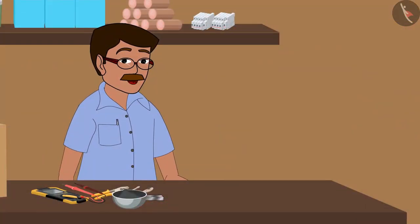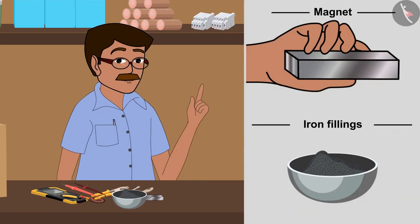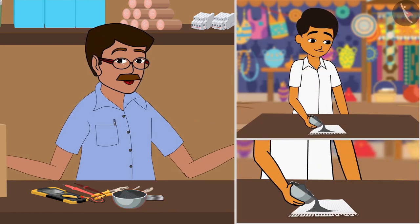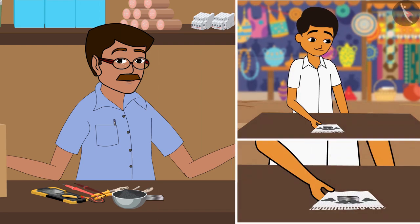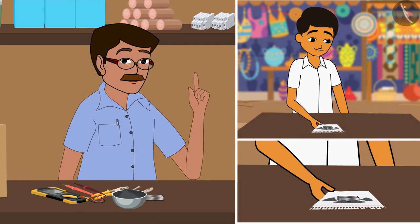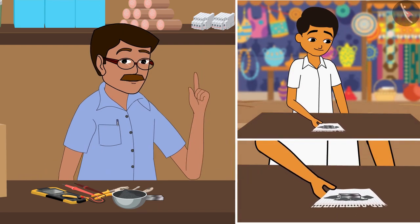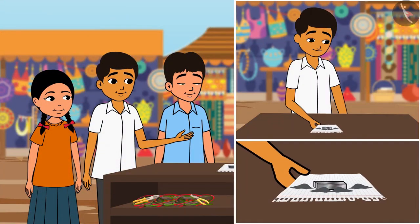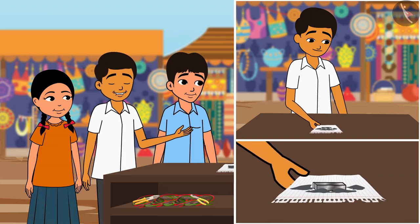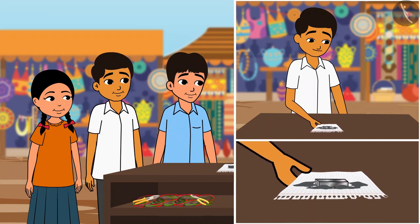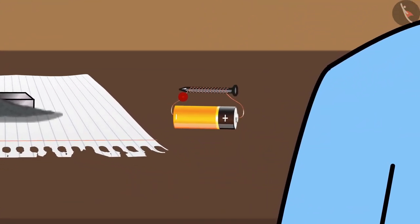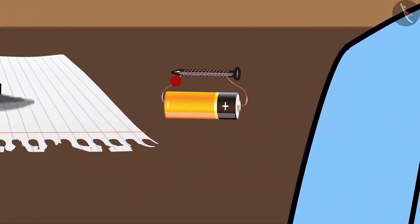See, I have a small bar magnet and some iron filings. Ram, can you put a little of these filings on a paper? Now keep the magnet on this paper and mildly shake the paper. Uncle, all the filings are moving towards the corner of the magnet. Raghu, come here and see this. What are you seeing here?